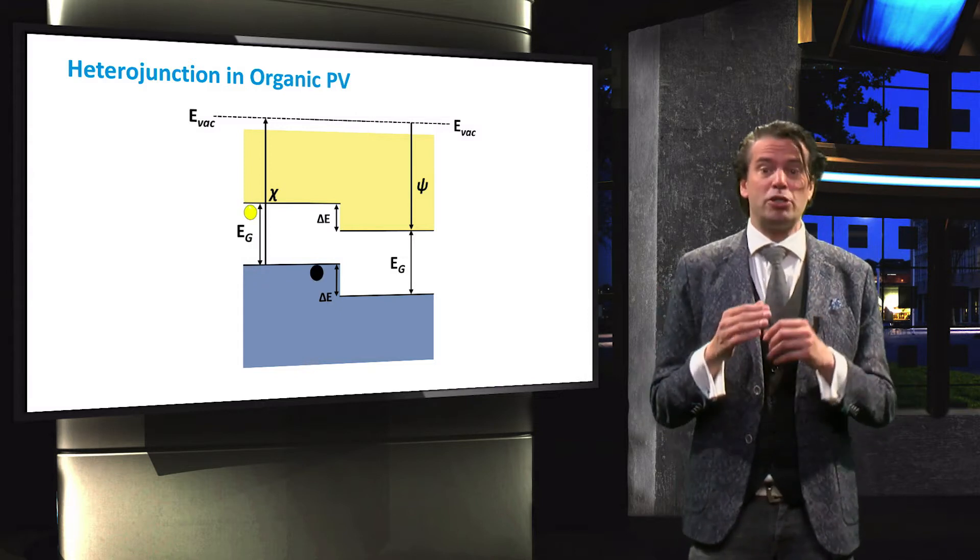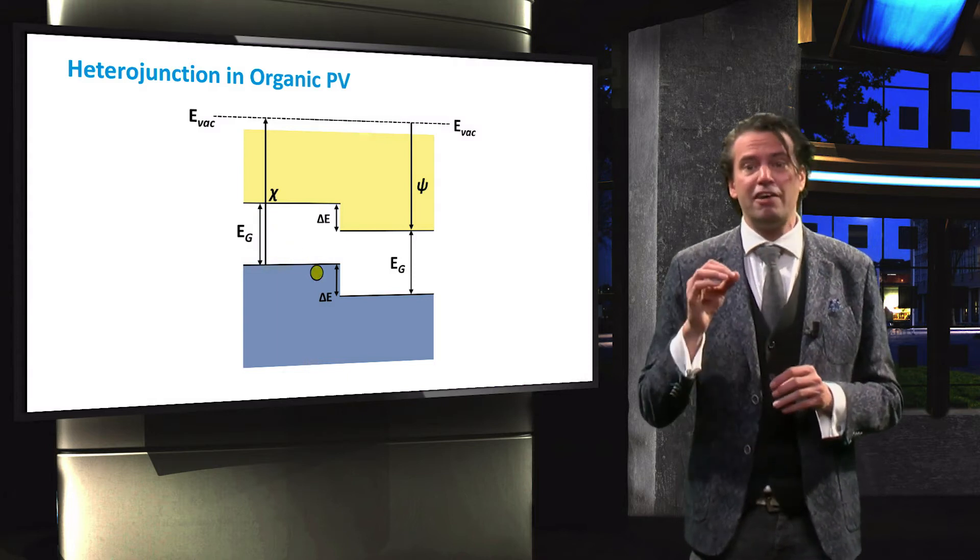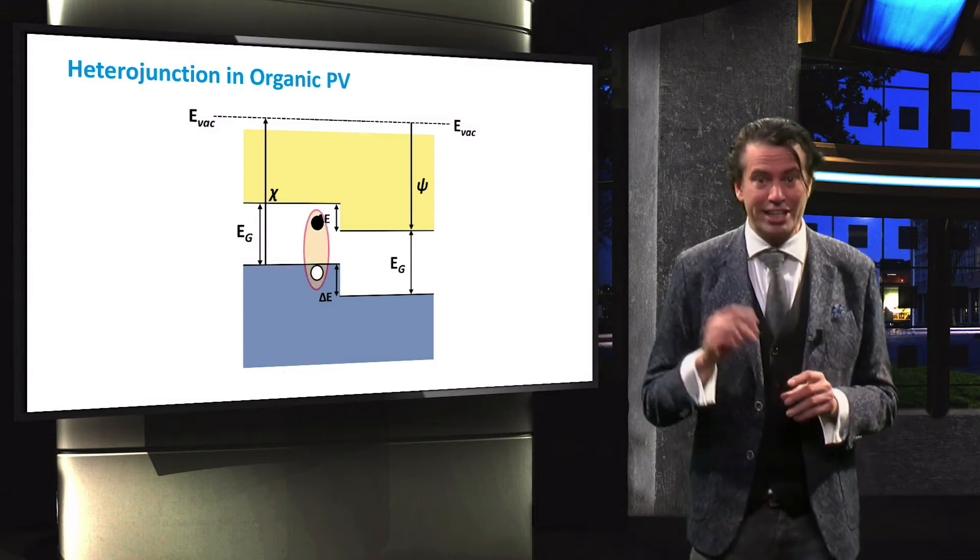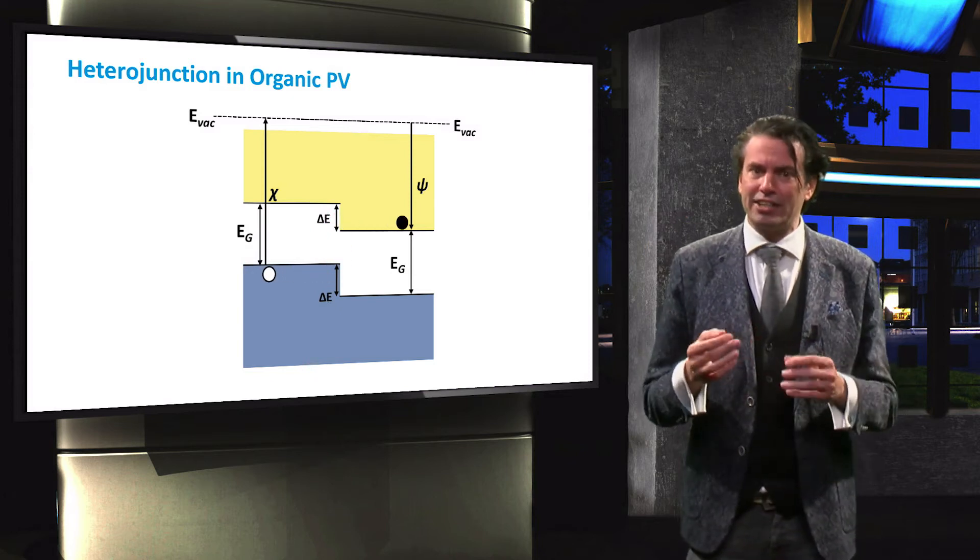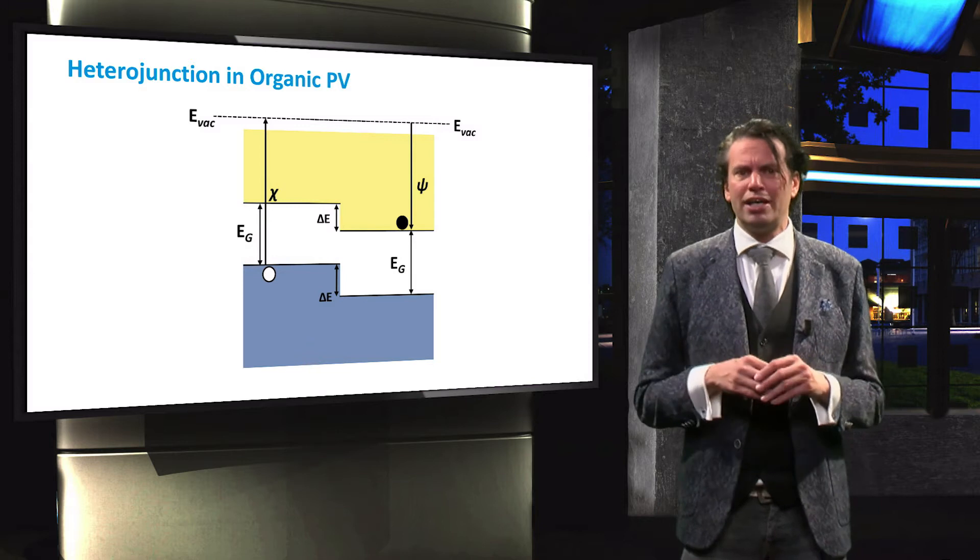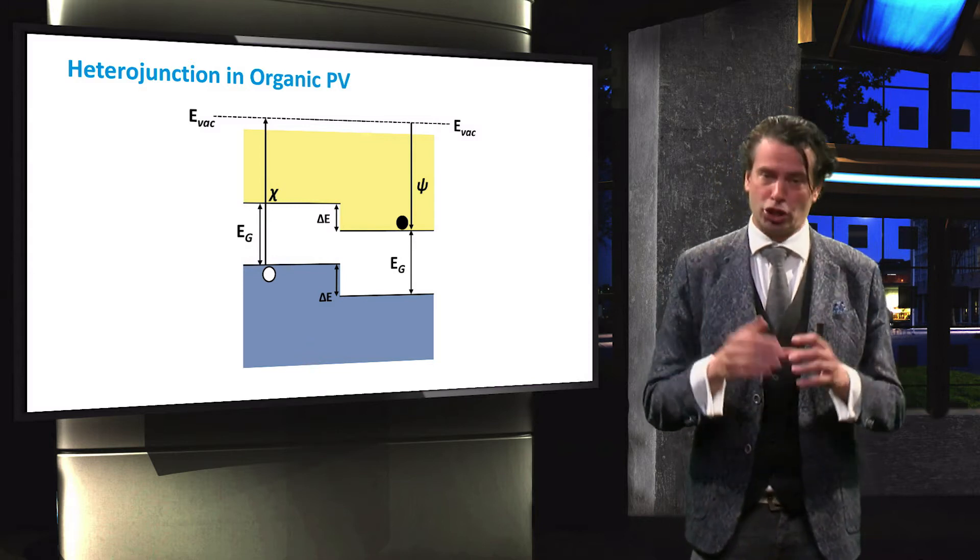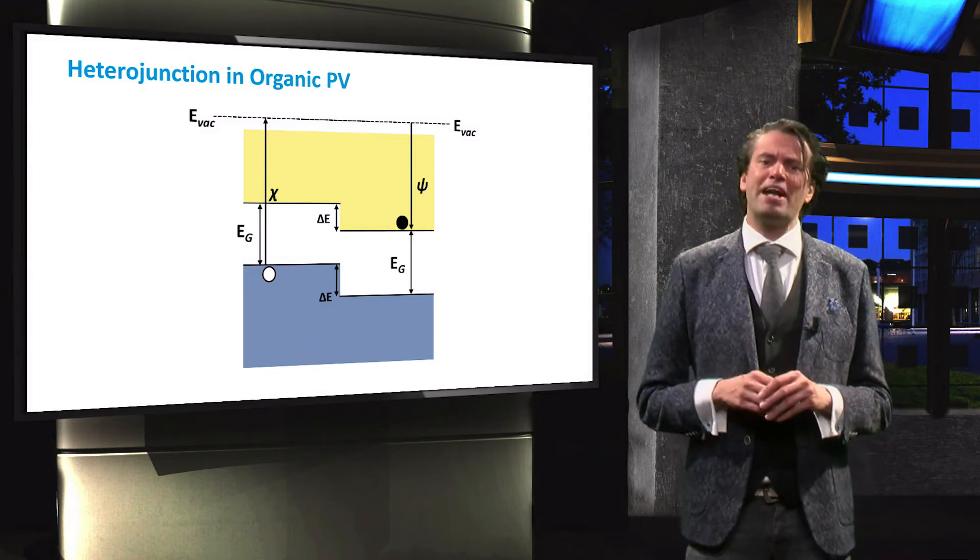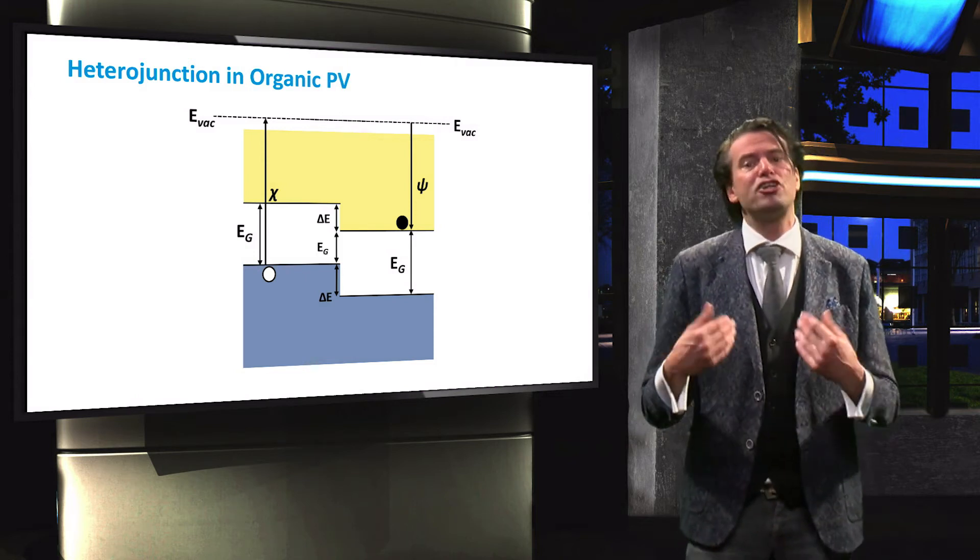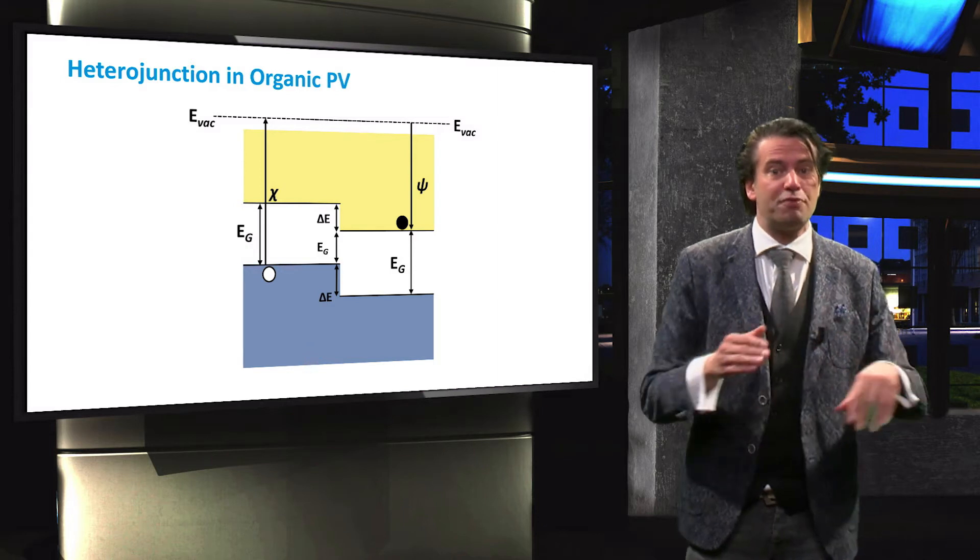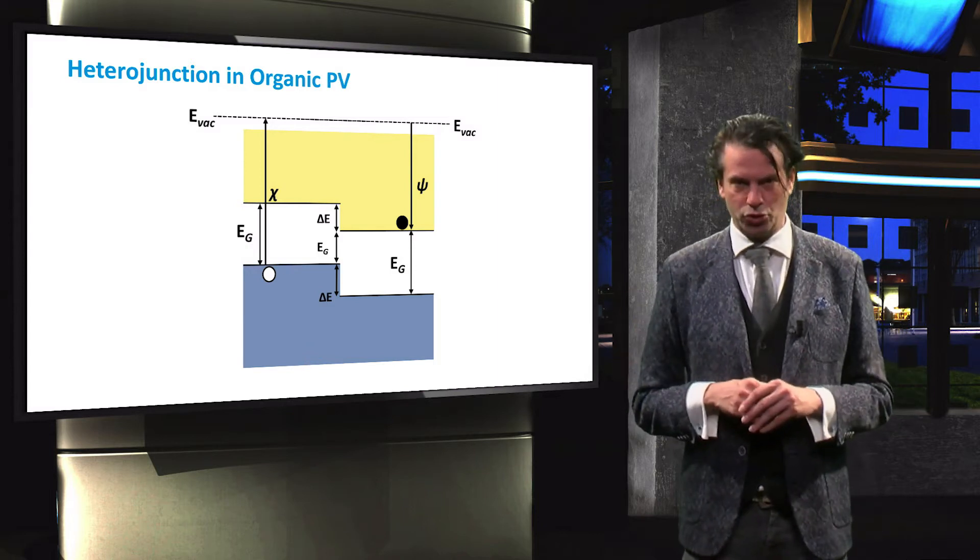An exciton can be split at this interface if the electrostatic force is high enough. Indirectly, the interface formed will act equivalent to a PN junction that separates charges. The effective bandgap in such a heterojunction interface becomes the difference in the energy levels between the LUMO of the electron acceptor and the HOMO of the electron donor.